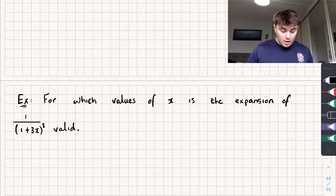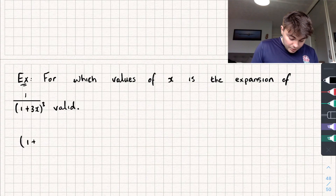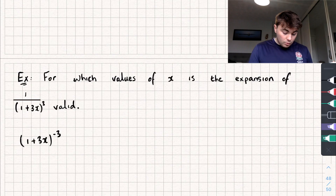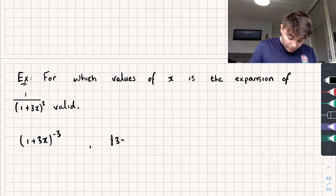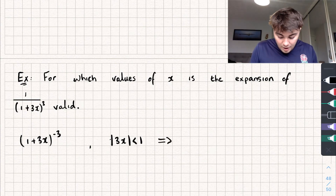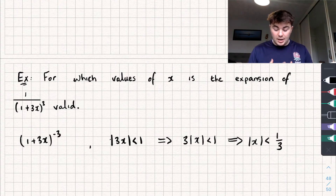The second question asks: for which values of x is the expansion of 1 over (1 + 3x) cubed valid? We rewrite it as (1 + 3x) to the power of negative 3. Similarly, rather than x we have 3x, so the absolute value of 3x is strictly less than 1. Pulling out the 3 gives 3|x| < 1, which implies |x| < 1/3. That's the range of values for which x is valid.